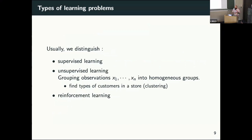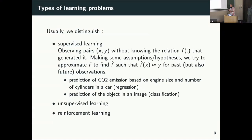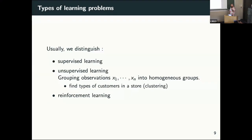Supervised learning is nice because you have ground truth — you can keep aside part of your labeled data to assess the quality of your model on unseen data. Unsupervised learning has many types. One type is clustering: trying to group together data that looks alike. The issue is that there is no ground truth for that — unless you take an expert and ask if the groups make sense — so it's a setup that is sometimes a little bit difficult to validate.